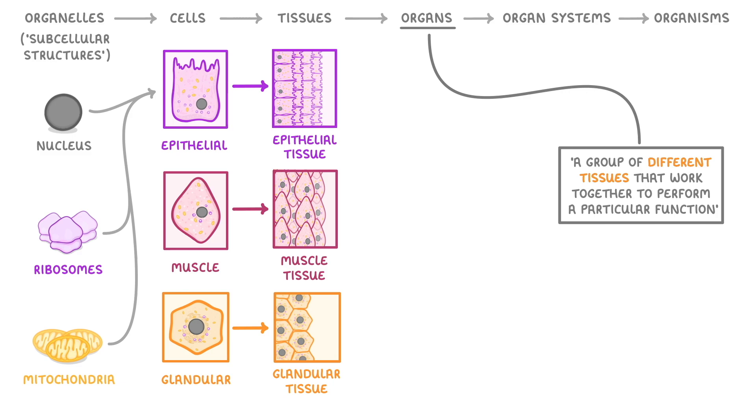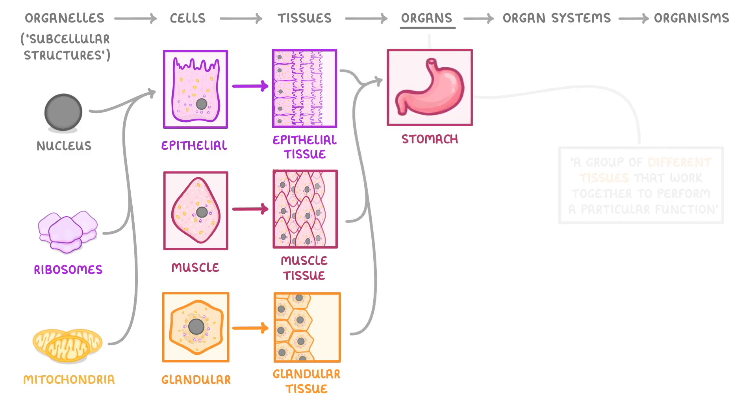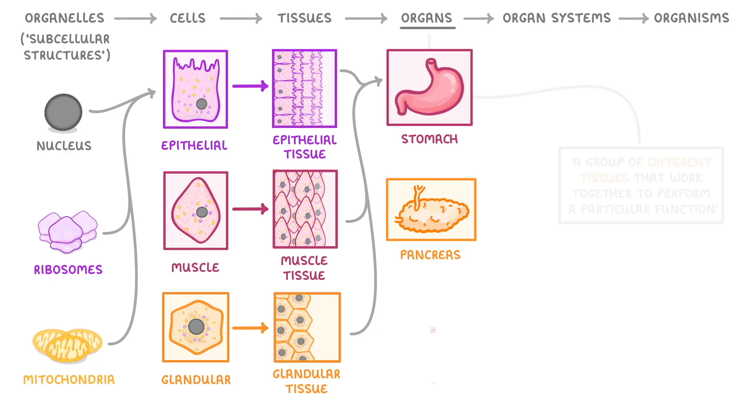So, epithelial tissue, muscular tissue, and glandular tissue may all work together to form an organ like the stomach, which in this case has the particular function of killing microorganisms and breaking down proteins. Meanwhile, different combinations of tissues might form other organs, like the pancreas or the liver.